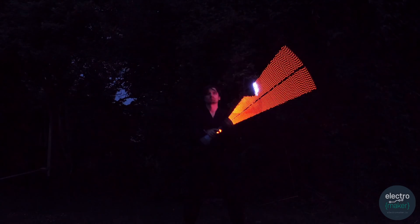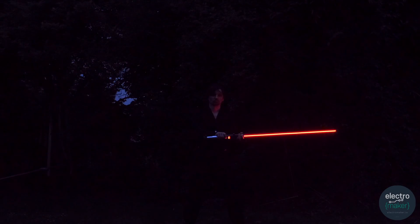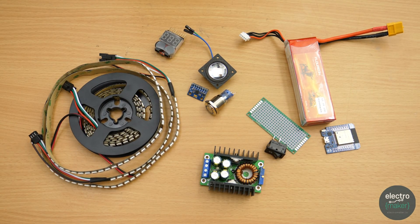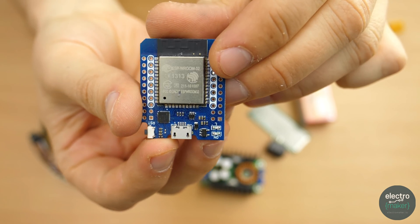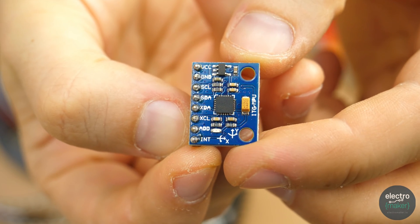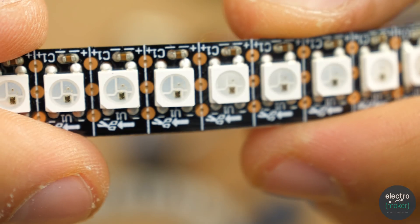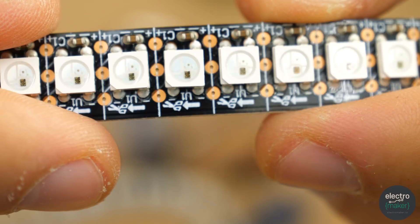Detailed build instructions and the code can be found on the ElectroMaker project page linked in the description. These are the components I have used. An ESP32 microcontroller, a gyro module, 2 meters of densely populated WS2012B LED strips, also known as NeoPixels.